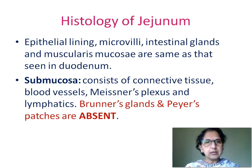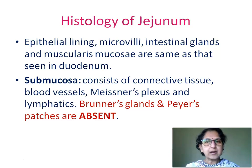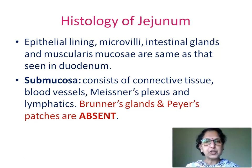Submucosa consists of connective tissue, blood vessels, Meissner's plexus, and lymphatics. Brunner's glands and Peyer's patches are absent. Brunner's glands are characteristic features of duodenum, while Peyer's patches are characteristic features of ileum. Both these are absent in the histology of jejunum.